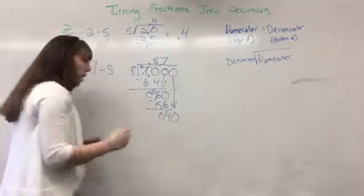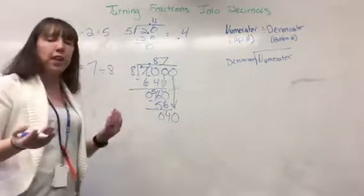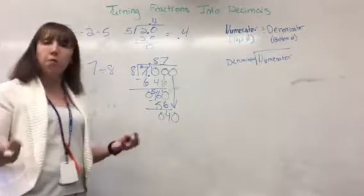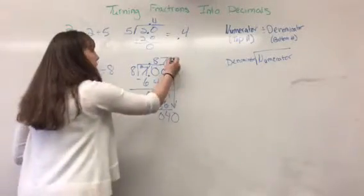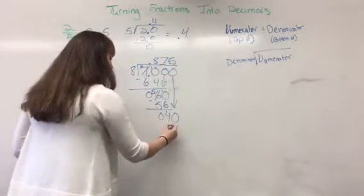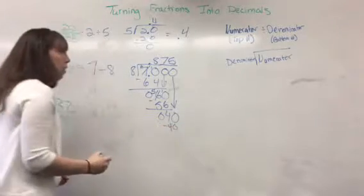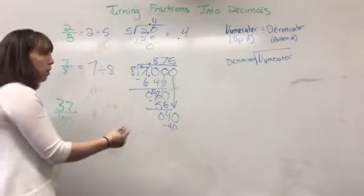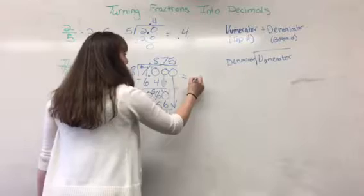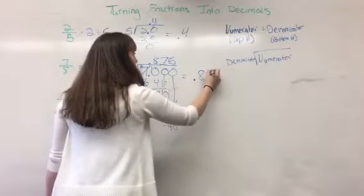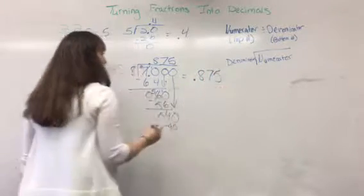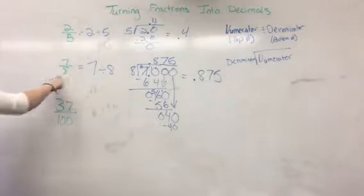Making this a 40. Well, multiplication facts again. We know that 8 times 5 equals 40. So we'll put a 5. And we'll subtract 40. So there's the work. Our decimal is 0.875. And that was for 7 eighths.